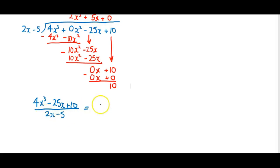And it was being divided by 2x - 5. And that's equal to the quotient 2x² + 5x. And I don't need to put the plus 0 in. Plus a remainder of 10. And out of the 2x - 5 we divide it by.